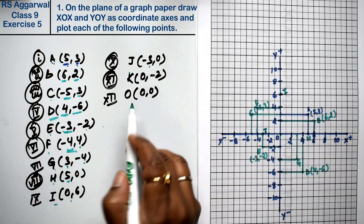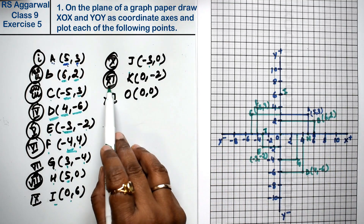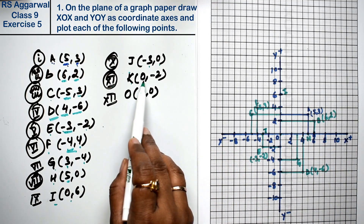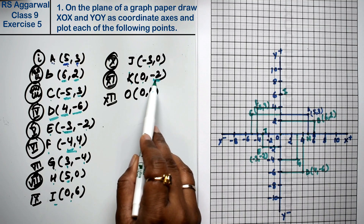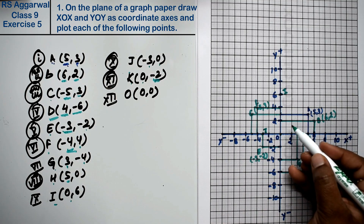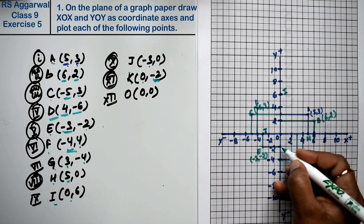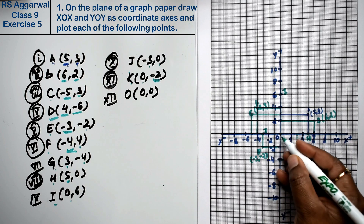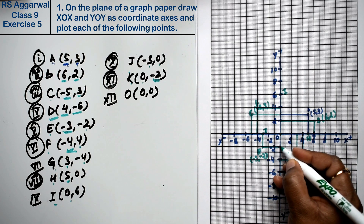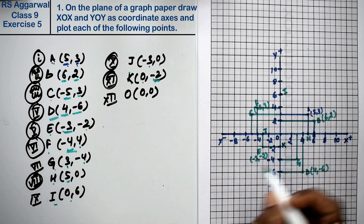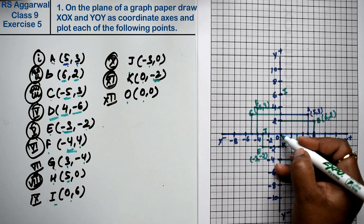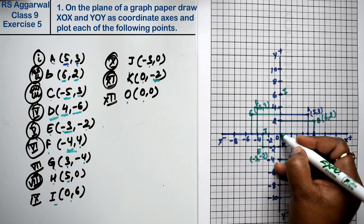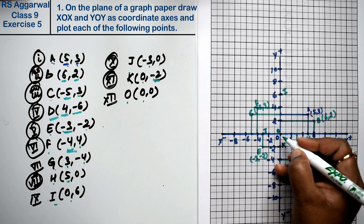Now, the 11th point: K is (0, -2). That means x is 0 and y is minus 2. x is zero — it stays on the y-axis — and y is minus 2, so this is point K at (0, -2). Finally, point O is (0, 0), which is the origin. So this is point O, the origin.